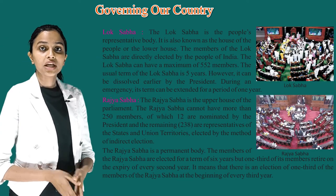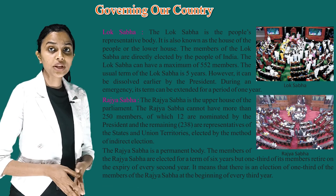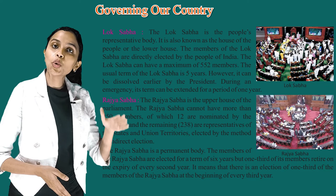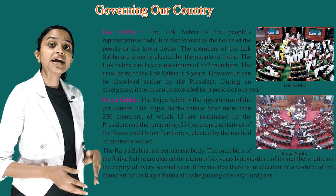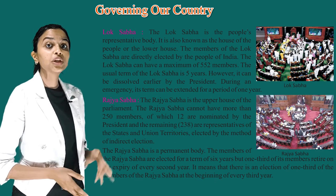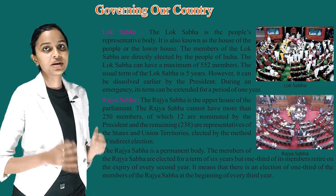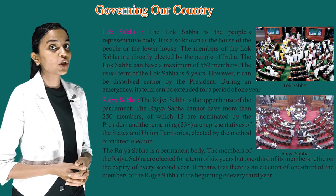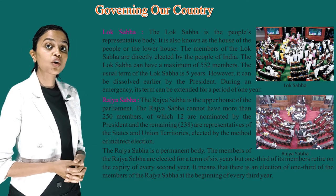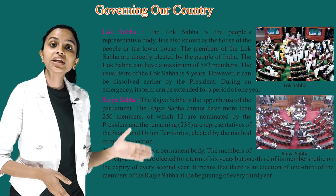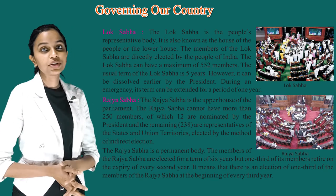Lok Sabha: the Lok Sabha is the people's representative body, also known as the House of the People or the Lower House. The members of the Lok Sabha are directly elected by the people of India. The Lok Sabha can have a maximum of 552 members. The usual term of the Lok Sabha is 5 years; however, it can be dissolved earlier by the President. During an emergency, its term can be extended for a period of 1 year.